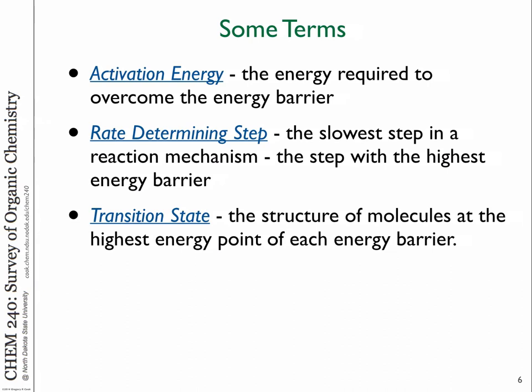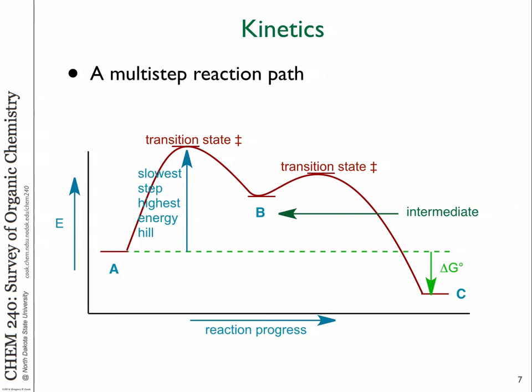If you have reactions with more than one step, then you have a possibility of which step actually determines the overall rate. Whatever has the highest energy barrier is going to be the slowest — analogous to riding your bicycle over a mountain. If you have three mountains in the way, getting to the top of the highest one is slowest. So the rate-determining step is the one with the highest activation energy. The transition state is how the molecules are interacting at that highest energy point — it's not going to exist for any period of time, so it's not an intermediate. That's different from an intermediate structure.